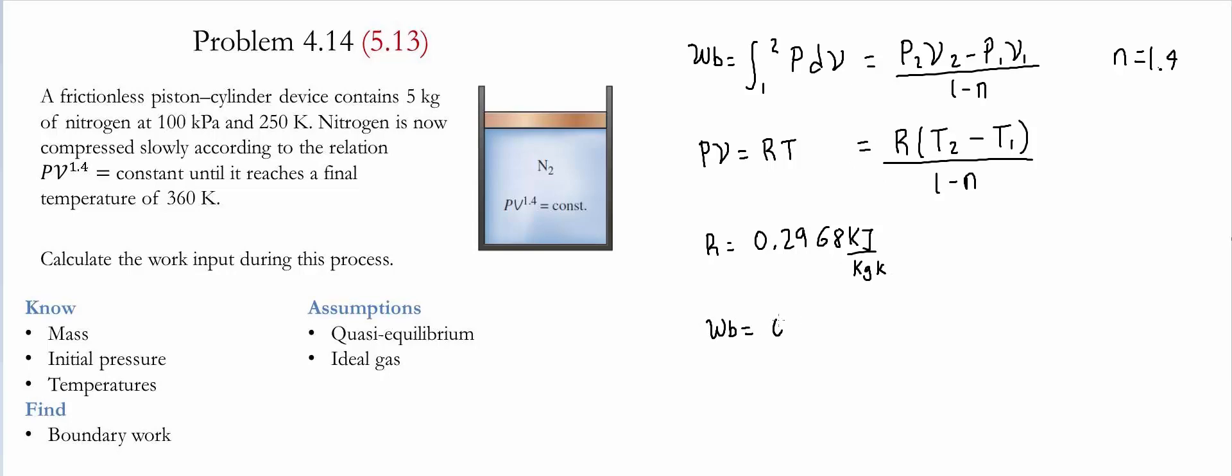We now substitute the values for the boundary work. So we have 0.2968 kilojoules per kilogram Kelvin, we substitute the two temperatures, the final temperature is 360 Kelvin, the initial temperature is 250 Kelvin, and we divide by 1 minus 1.4. Notice that Kelvin cancels, the bottom part is dimensionless, so at the end what we get is negative 4.408 kilojoules per kilogram.